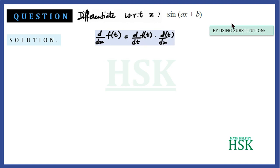To solve this question by the substitution method, we should know this result: d/dx of f(t), where t is a function of x, is equal to d/dt of f(t) multiplied by d/dx of t.